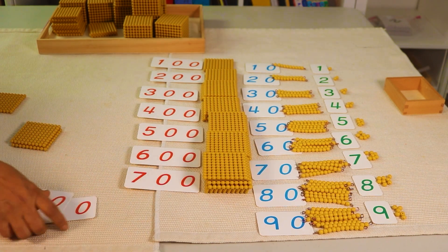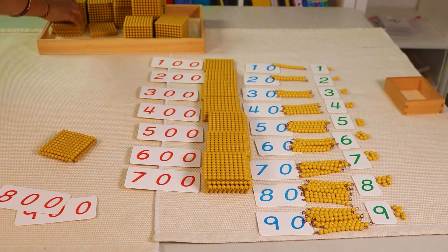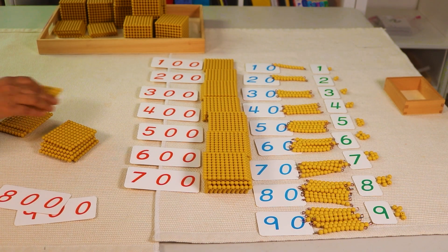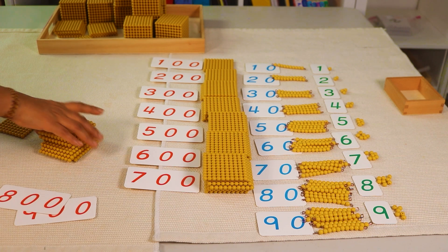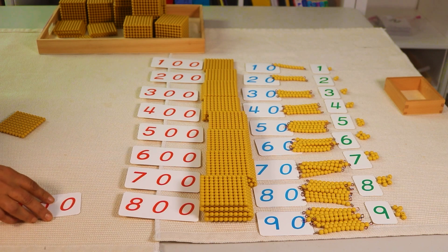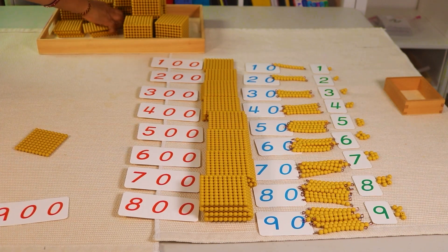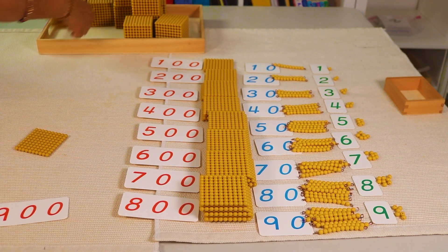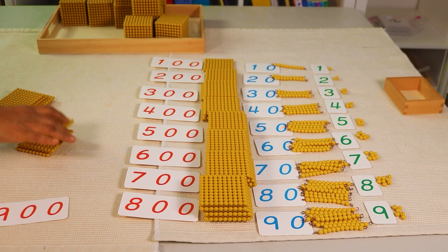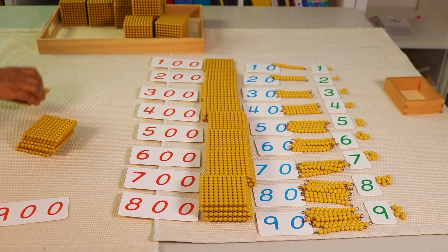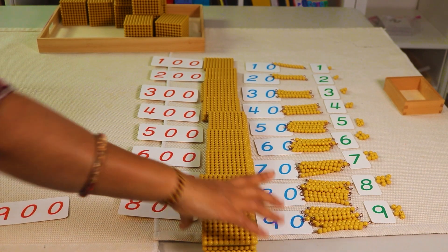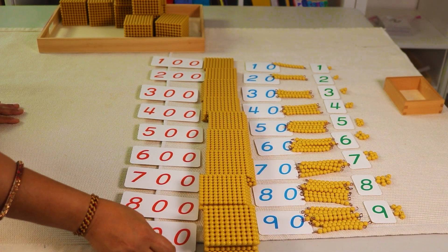Eight hundred, and then one, two, three, four, five, six, seven, eight hundred. And then nine hundred. One, two, three, four, five, six, seven, eight hundred, nine hundred. This is nine hundred.